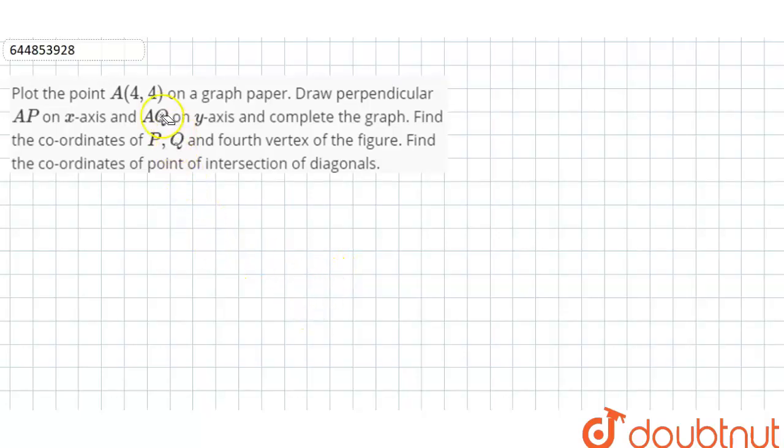Plot the point A(4,4) on a graph paper, draw perpendicular AP on X-axis and AQ on Y-axis and complete the graph. Find the coordinates of P, Q and fourth vertex of the figure. Find the coordinates of the point of intersection of diagonals.